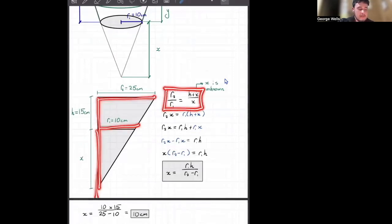So using similar triangles, we know that r2 over r1 should be the same as h plus x over x. So that's what this equation is here. And our x is unknown. Like I've said before, we're going to try and work that out.